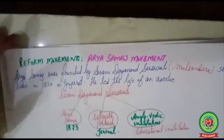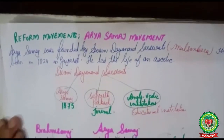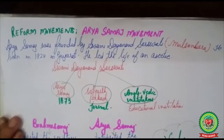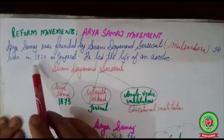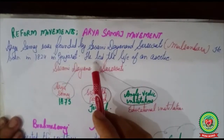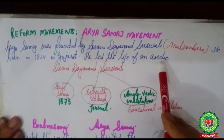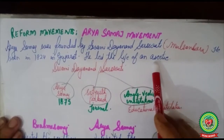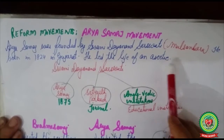We will now discuss the Arya Samaj Movement. Arya Samaj was founded by Swami Dayananda Saraswati, whose real name was Mool Shankar. He was born in 1824 in Gujarat. He led the life of an ascetic — a person who leads a highly self-disciplined life and stays away from the comforts of life.